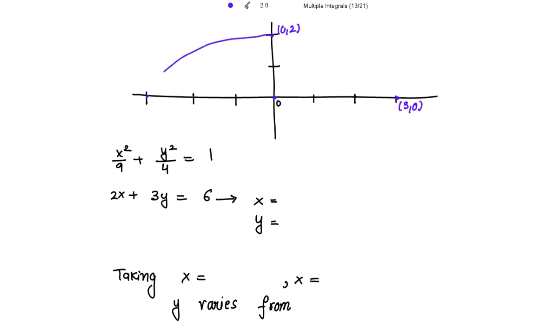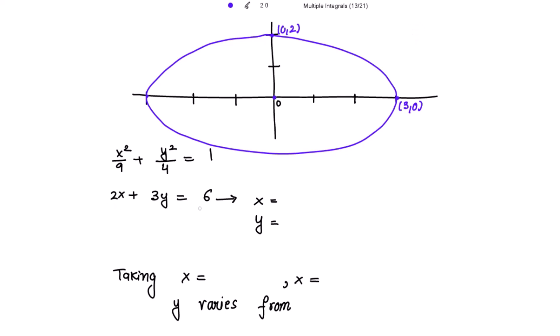Drawing the ellipse and then the line 2x + 3y = 6: putting x = 0 gives y = 2, and putting y = 0 gives x = 3. So the line passes through (0, 2) and (3, 0) — the same two points that lie on the ellipse. This is the straight line 2x + 3y = 6 and the ellipse x²/9 + y²/4 = 1.